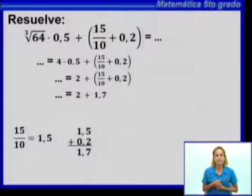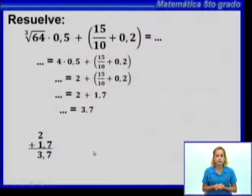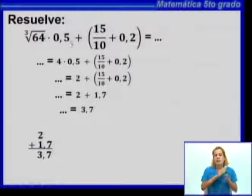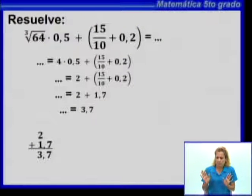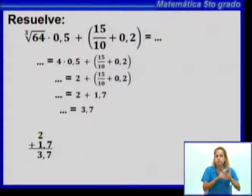Ya tengo resueltos los dos sumandos. Realizamos la adición: 2 más 1,7. Observen la colocación: 0 más 7 es 7, 2 más 1 es 3, igual a 3,7. Si lo resolvieran con el orden operacional, primero harían el paréntesis, después la raíz cúbica, después la multiplicación, y por último la adición. Hemos obtenido el mismo resultado de manera correcta. Les dejo un tiempo para que copien solamente el ejercicio combinado y después lo resuelvan siguiendo el orden operacional para que comparen los resultados.